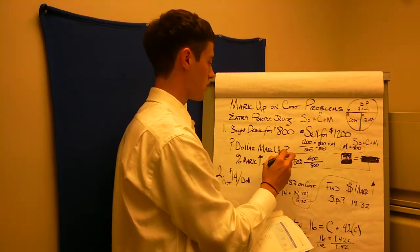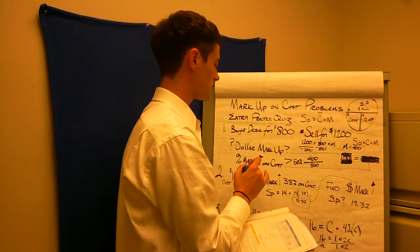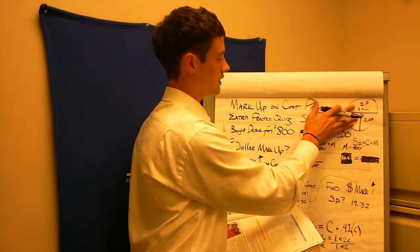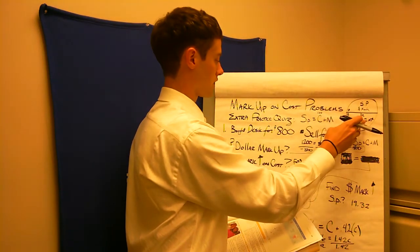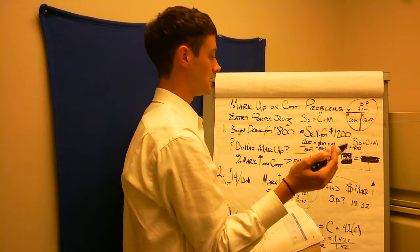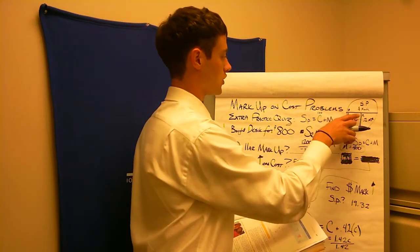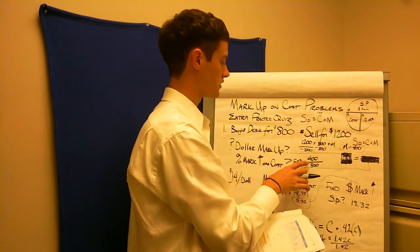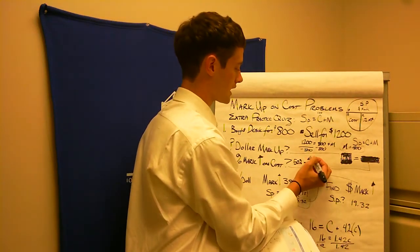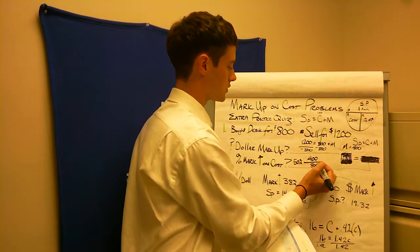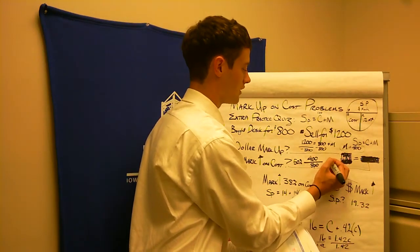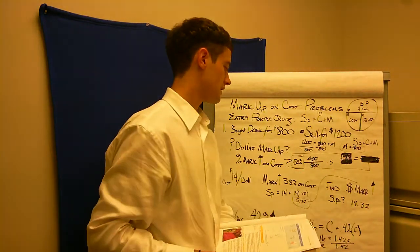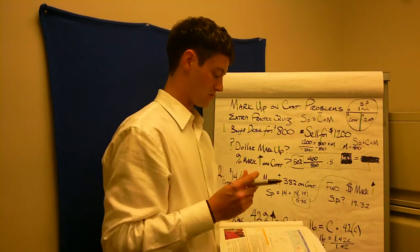Okay, so that's my dollar markup is $400. Now, what is the percent markup on cost? Well, if I cover up cost, I have my markup divided by my percent markup. Well, do we know percent? That's what we want to calculate. So my markup is $400 and my cost, I was told, is $800. So $400 divided by $800. Well, my zeros cancel out. I got 4 divided by 8, which is 0.5, also known as 50%. So Irene has a 50% markup on cost for that first problem.